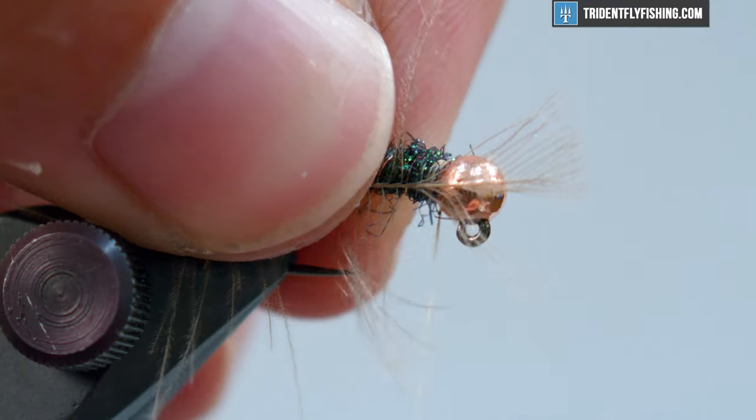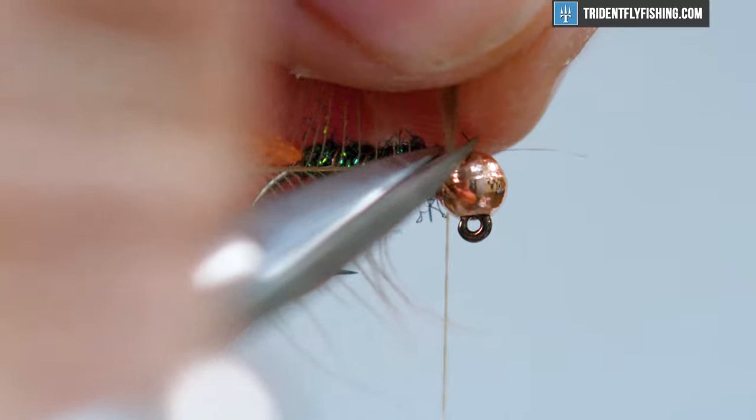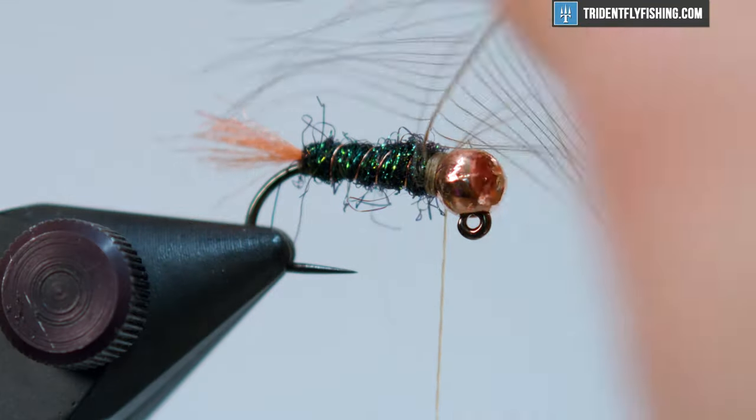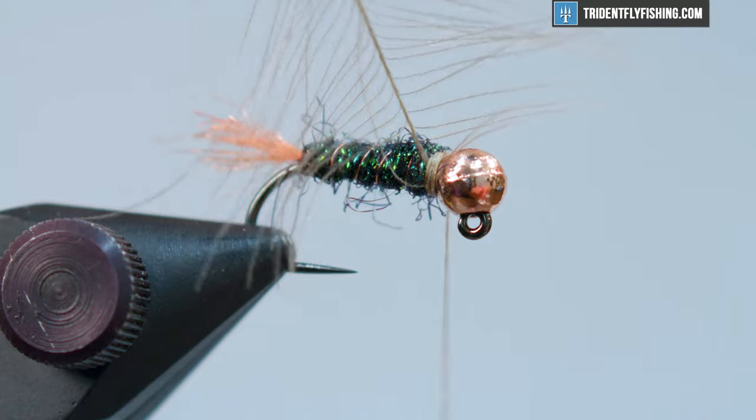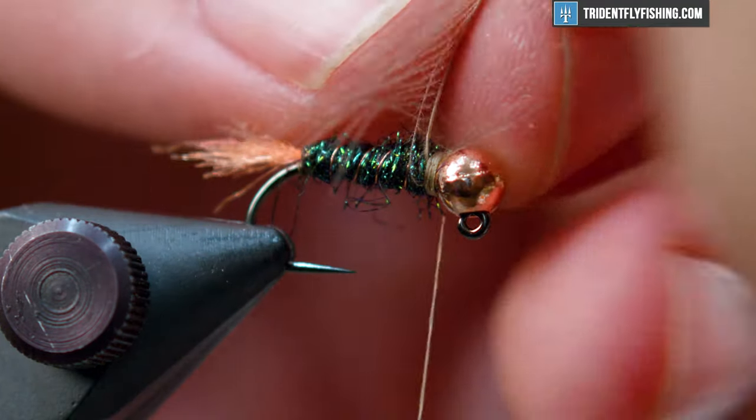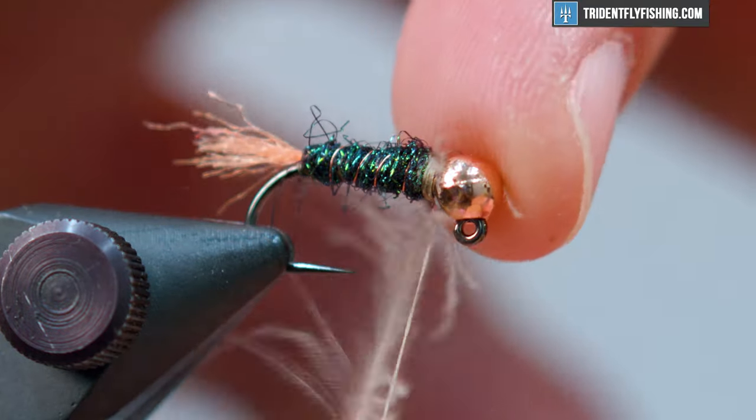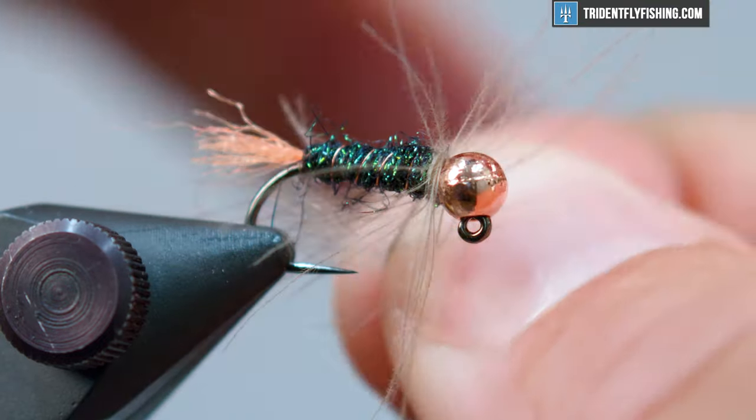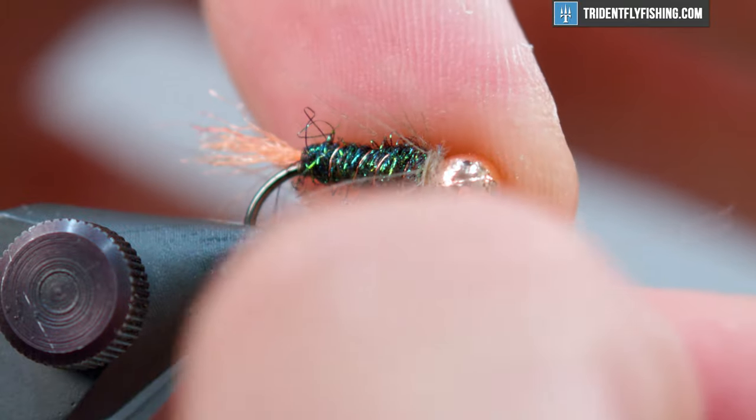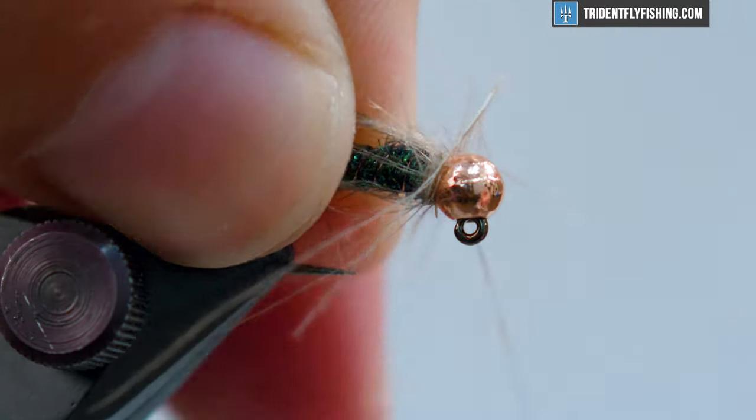We'll tie this feather in right behind the bead at about a 45 degree angle facing southwest. Snip the tip. Then we'll just start to wrap this. I wrap with my right hand and then sweep everything back with my left. You don't need a whole lot of wraps here. It's just kind of to imitate the legs. Or if you're fishing a hatch maybe an emerging insect. Get that tied in.